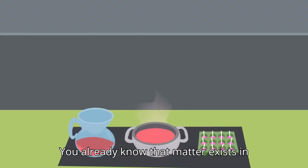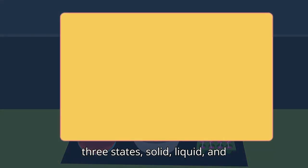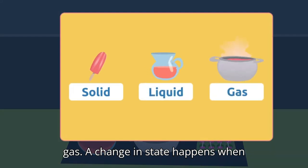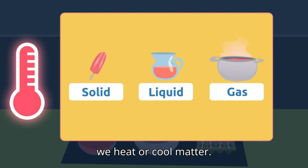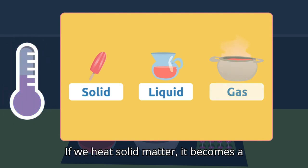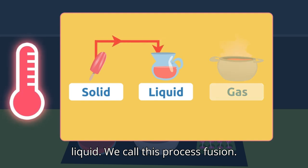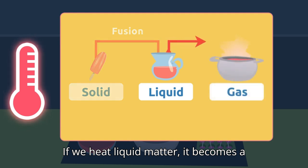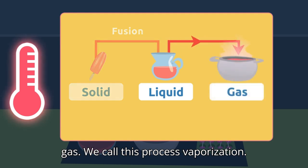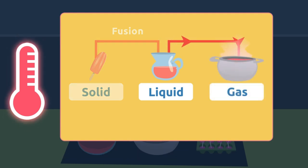You already know that matter exists in three states: solid, liquid, and gas. A change in state happens when we heat or cool matter. If we heat solid matter, it becomes a liquid — we call this process fusion. If we heat liquid matter, it becomes a gas — we call this process vaporization.